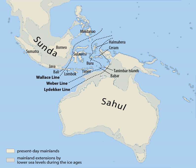During the last glacial period, sea levels were lower and all of Sundaland was an extension of the Asian continent. As a result, the modern islands of Sundaland are home to many Asian mammals including elephants, monkeys, apes, tigers, tapirs, and rhinoceros. The flooding of Sundaland separated species that had once shared the same environment.